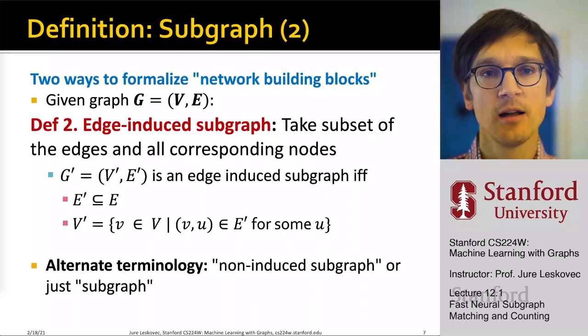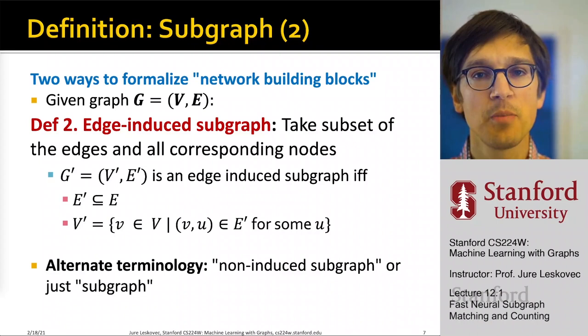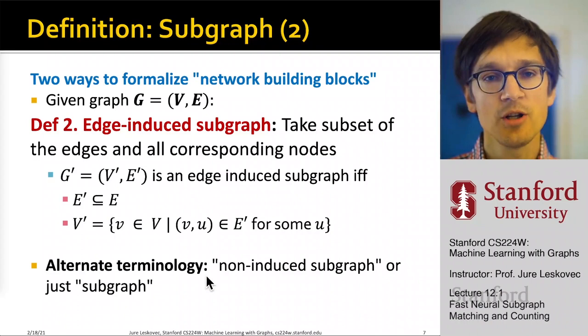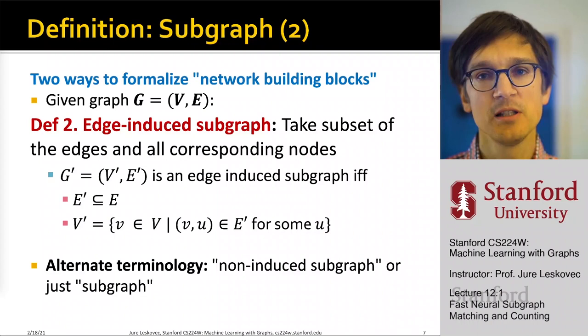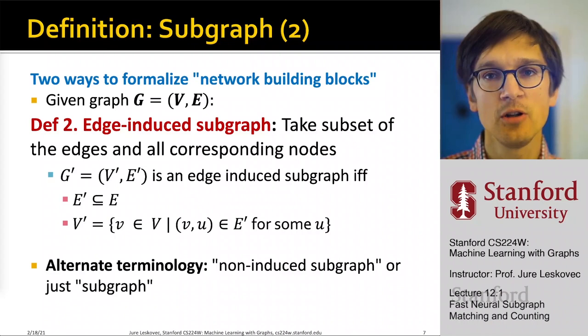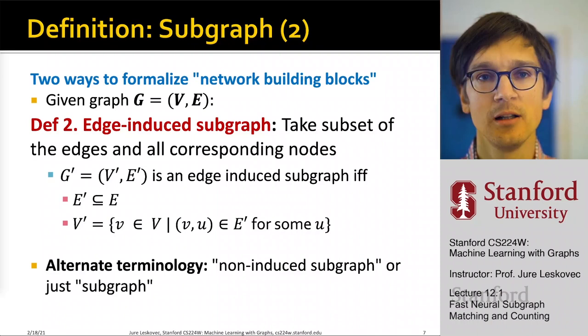The second, less common definition is the edge-induced subgraph, where we take a subset of edges and all corresponding nodes. G prime is an edge-induced subgraph defined by a subset of edges E prime, and the node set V prime is determined through those edges. In the terminology we'll be using, this is called a non-induced subgraph because it is determined by the set of edges rather than nodes. Most often, people prefer to work with node-induced subgraphs — especially in natural science domains like chemistry where we worry about functional groups.